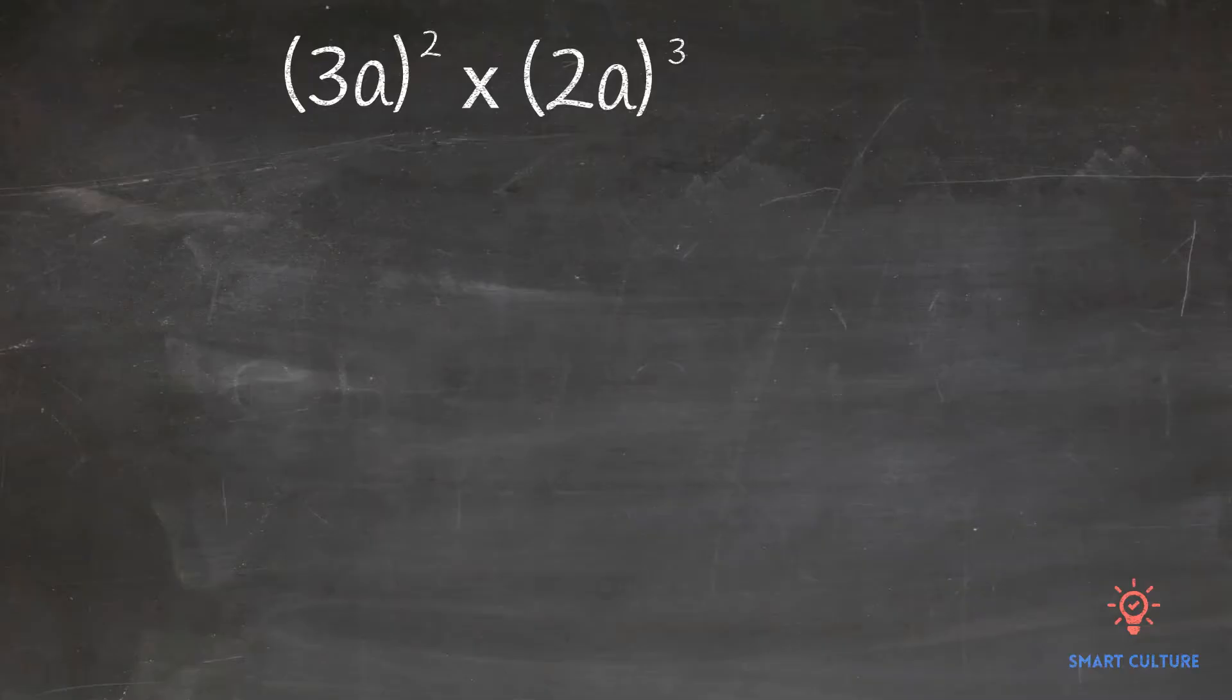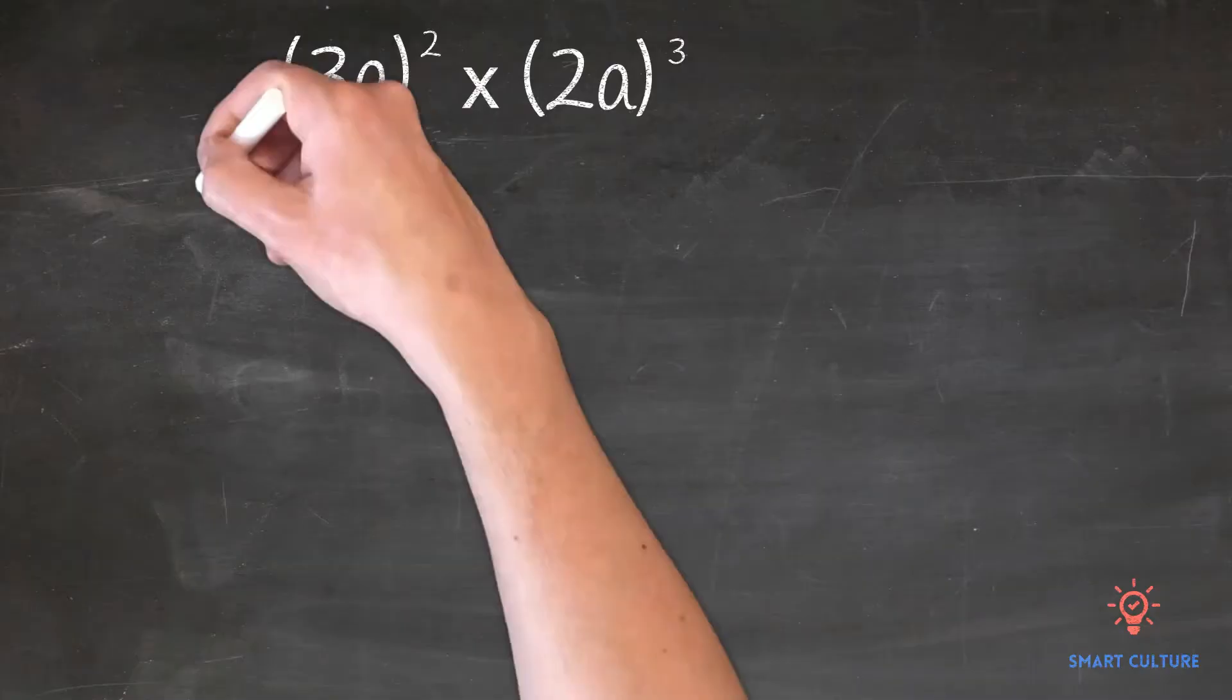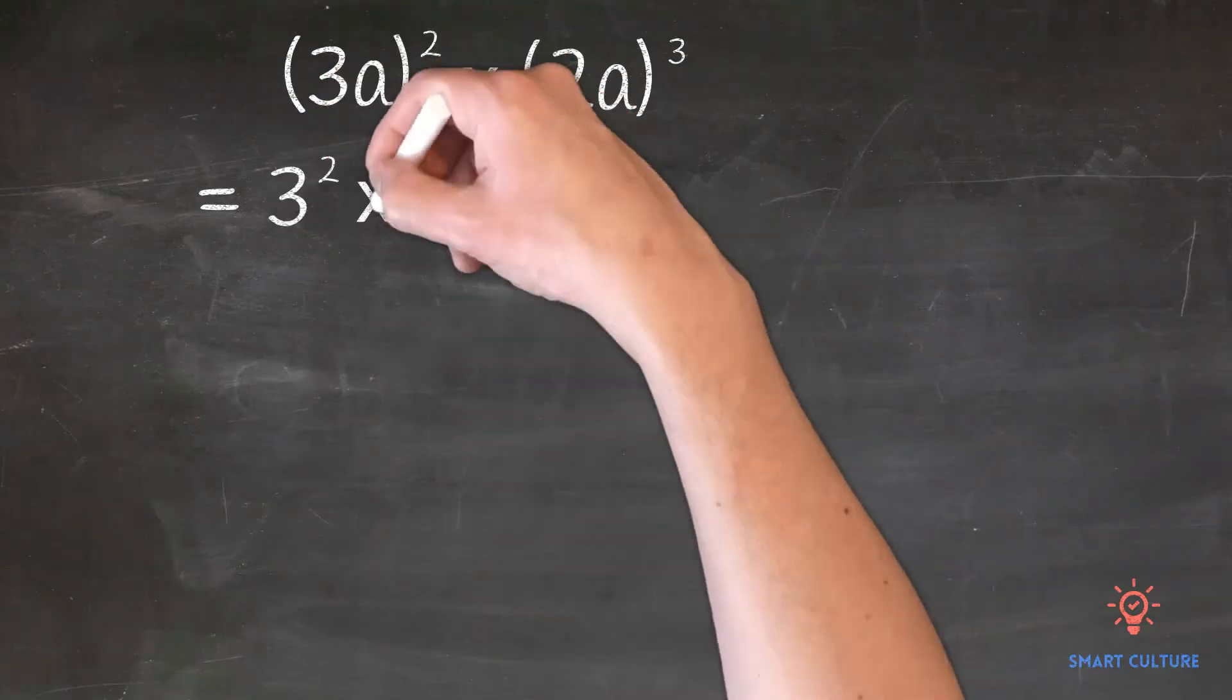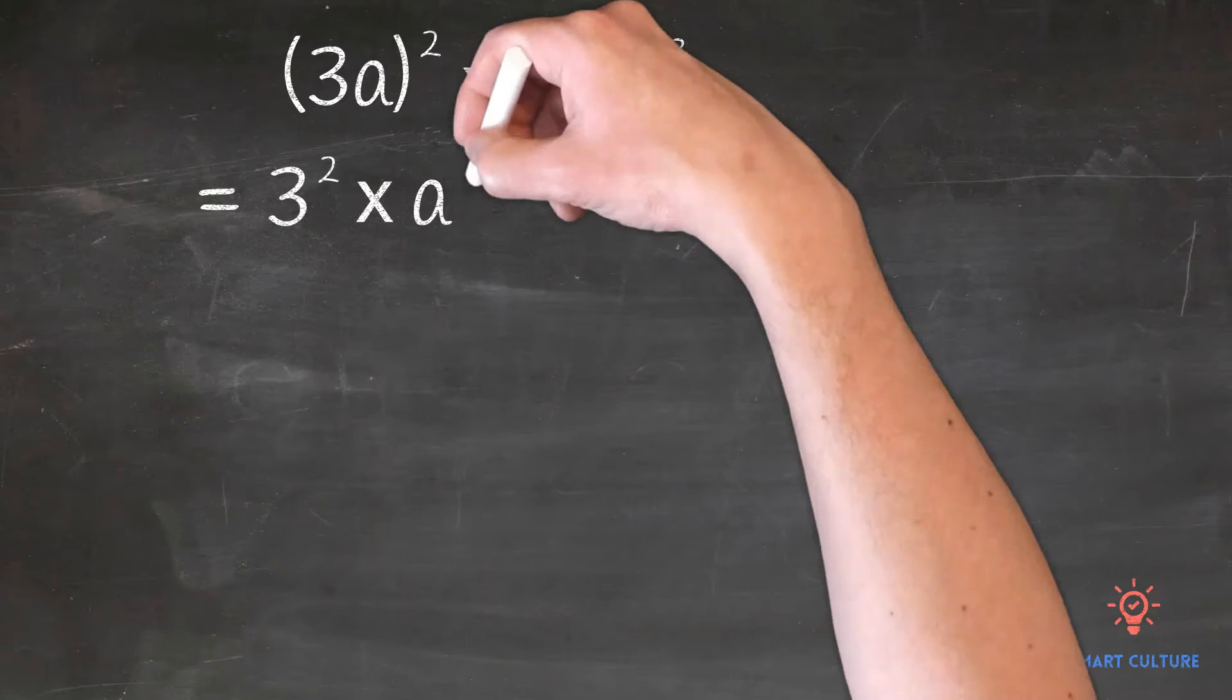Remember, power raised to a power is equal to the same base raised to the product of the exponents. So this 3 actually has an exponent of 1. 1 times 2 equals 2. This a has an exponent of 1. 1 times 2 equals 2.